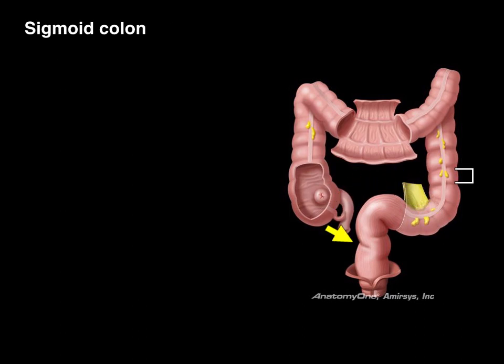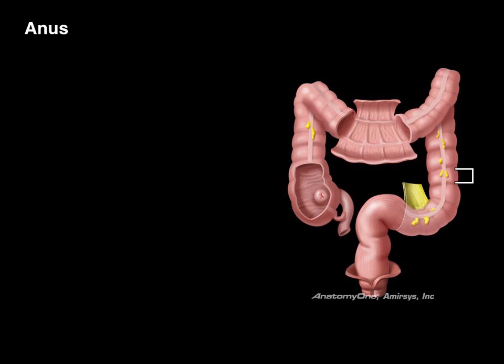The sigmoid colon gets its name because sigmoid means S — it makes an S-shaped pattern as it goes into the rectum, and rectum or rectus means straight. That's a straight shot down to the anus where the anal sphincters are. The internal anal sphincter is smooth muscle you don't control, but as feces compacts down to the rectum the smooth muscle relaxes. The external anal sphincter is skeletal muscle under voluntary control, and it's the only thing stopping the feces from exiting. And there is our GI tract in an overview.